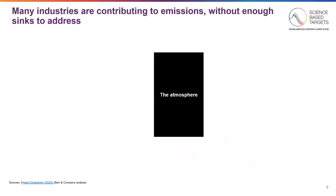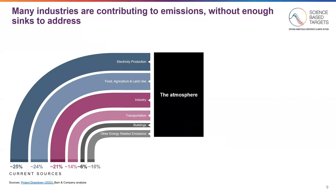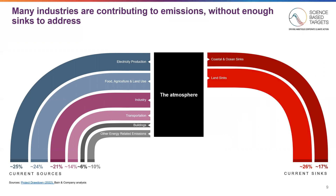Many industries are contributing to emissions in our atmosphere, and these emissions are outpacing the capacity of the earth's natural sinks to absorb them. You can see the array of activities contributing, particularly driven by electricity production, food, agriculture and land use, and industry. However, the natural world cannot keep up with all the CO2 emissions we are producing. Natural coastal, ocean, and land sinks are only able to absorb 40% of the emissions we produce. That leaves nearly 60% in the atmosphere, requiring us to limit total emissions while also investing in ways to better capture and absorb excess carbon.